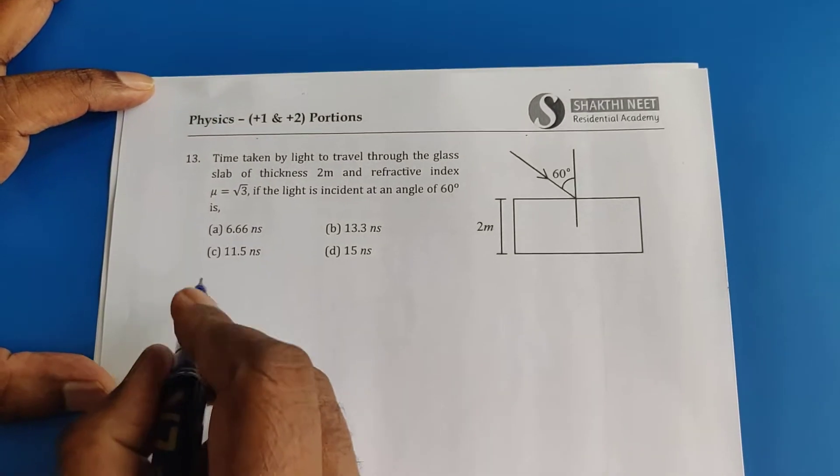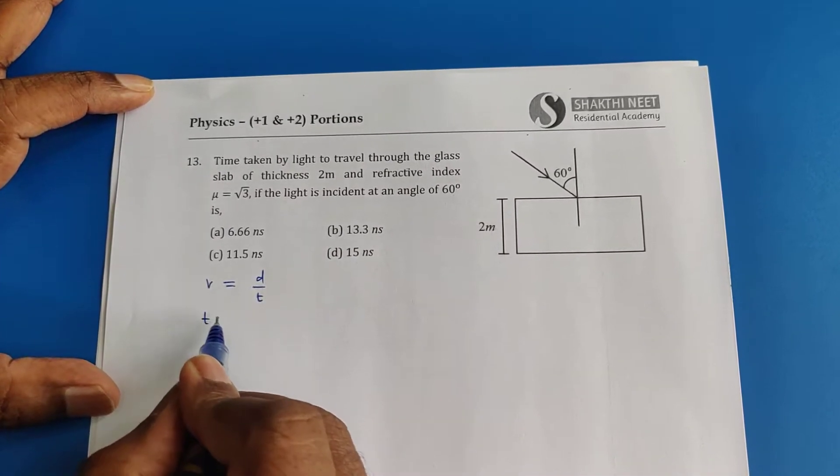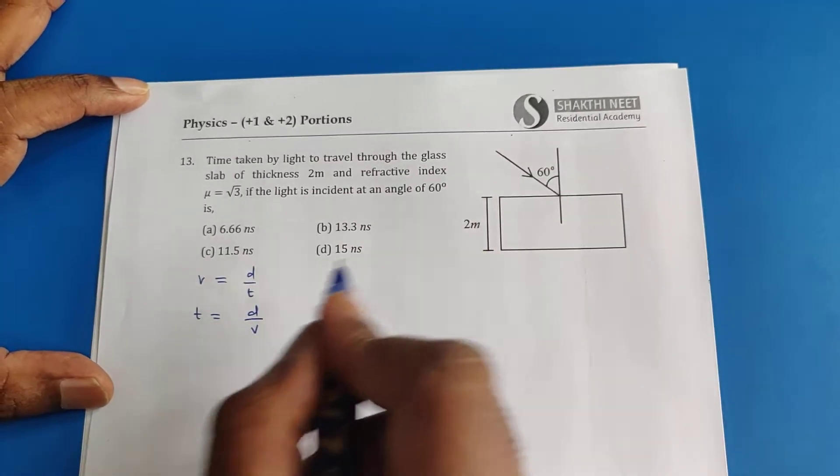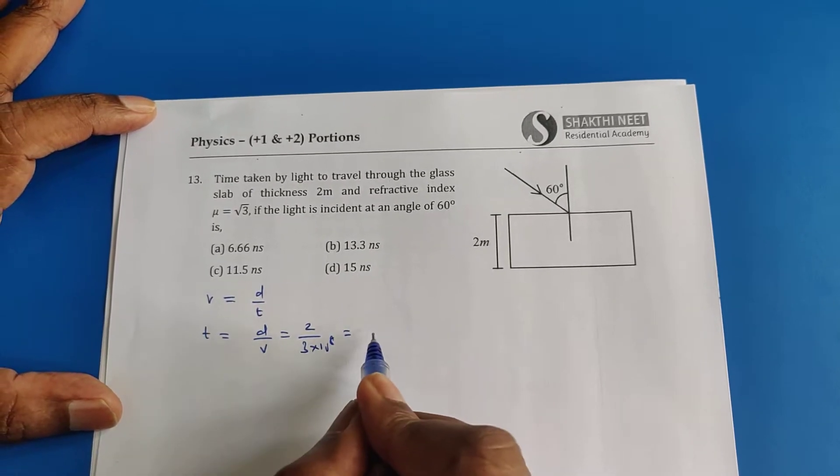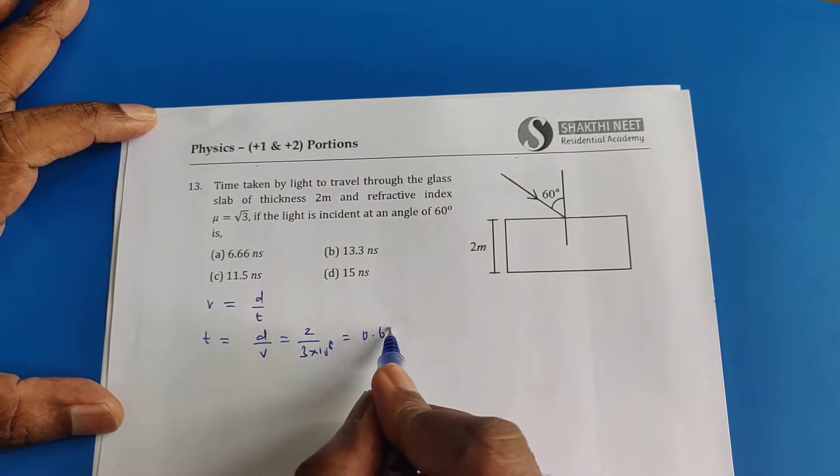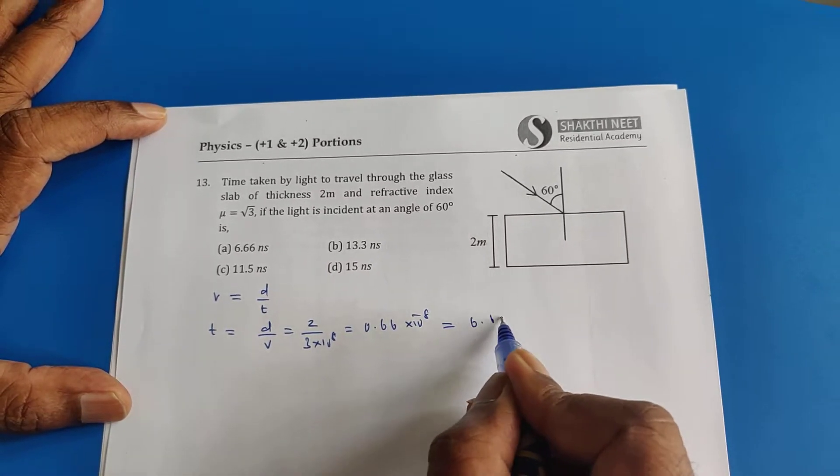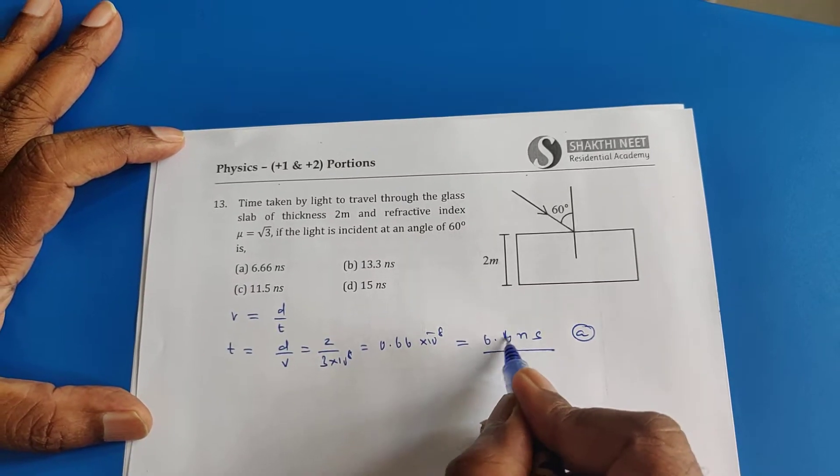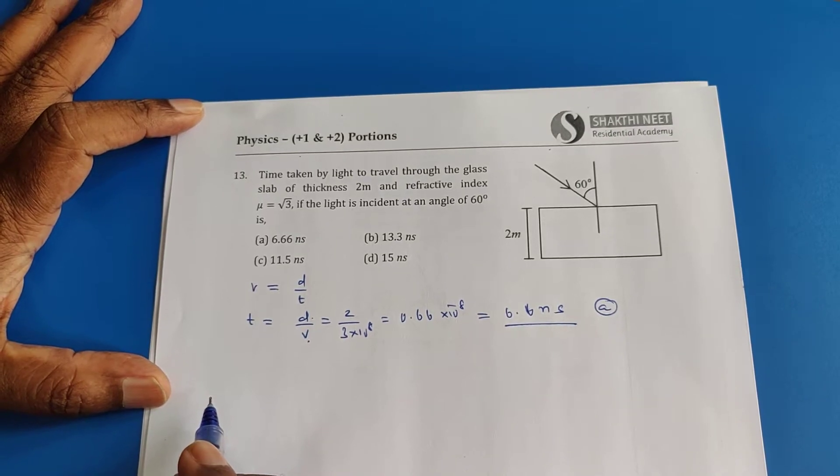How much time is it going to take for light to travel through the glass slab? Velocity is distance by time. What is asked is time. Time is distance by velocity. If you directly substitute distance is 2 and velocity of light is 3 into 10 power 8, then this will be 0.66 times 10 power minus 8, which is a wrong answer because the velocity is wrong and the distance is wrong.